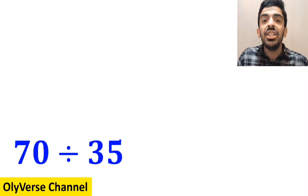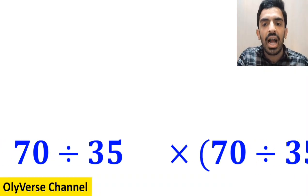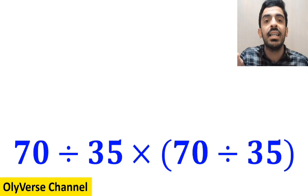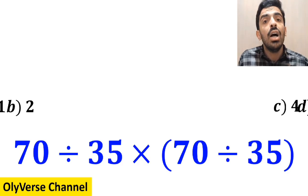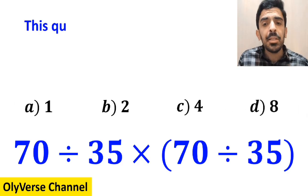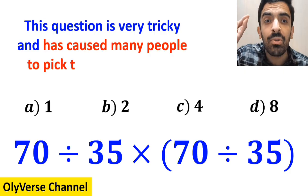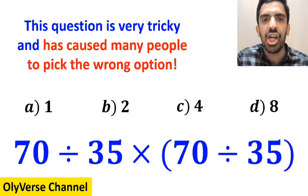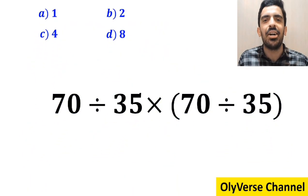What is the value of the expression 70 divided by 35 multiplied by open parenthesis 70 divided by 35 close parenthesis? Which option do you think is the correct answer to this question? This expression is very tricky and has caused many people to pick the wrong option. Let's go step by step and solve it together.